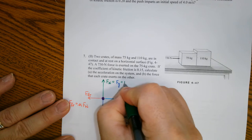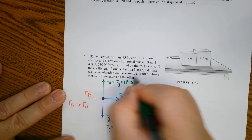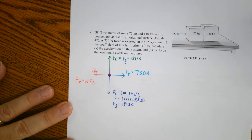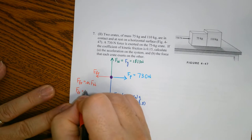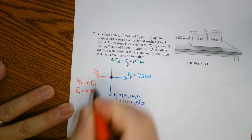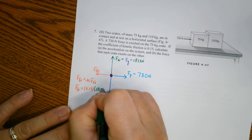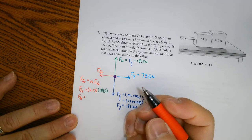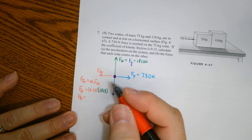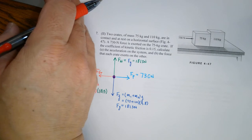That came out to be 1813 Newtons. Because there's no acceleration in the y direction, our F_normal has the same value as FG, which is 1813 Newtons. Therefore, friction equals 0.15 times 1813, and our friction came out to be 271.95 Newtons.